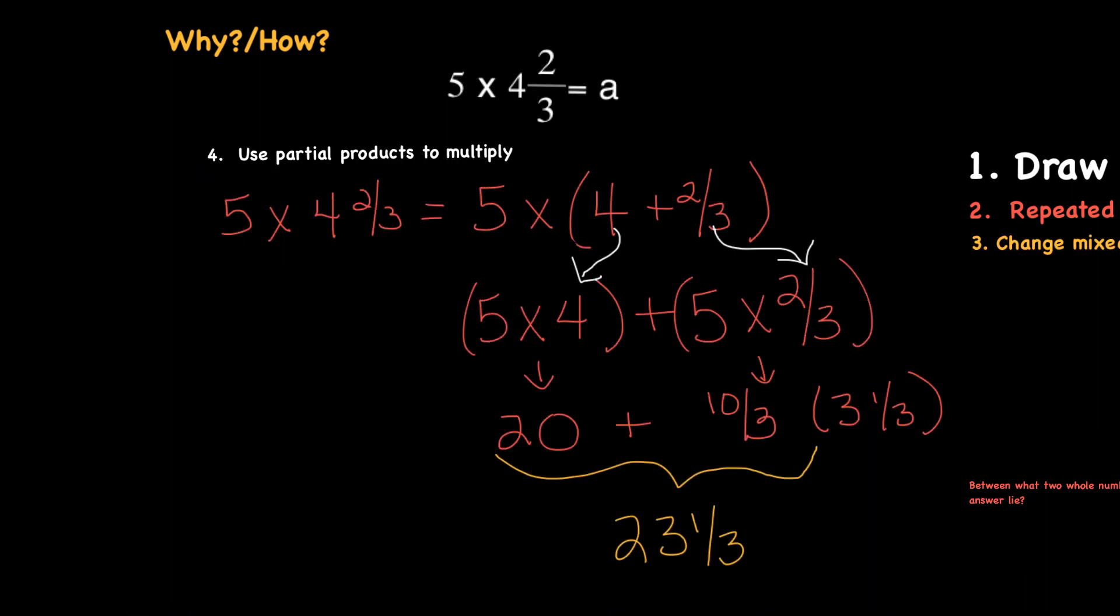So our fourth strategy is to use partial products to multiply, and you might be wondering how in the world are we going to use partial products when we've got a mixed number. So basically, what I've done is I've set up the problem here just like I would write it normally, but I'm going to take apart the 4 and 2 thirds. So as you can see, I scooted the 5 over here, put my multiplication sign, and then in parentheses, I took apart that 4 and 2 thirds.